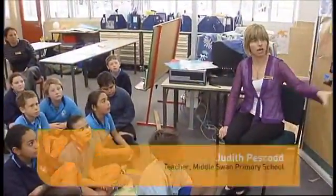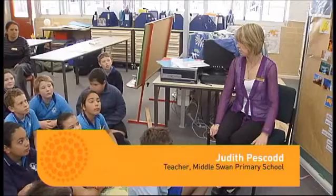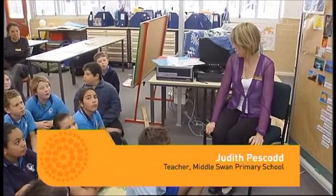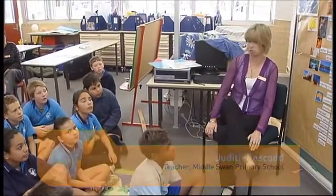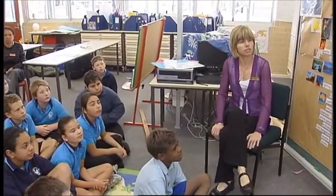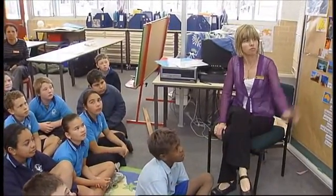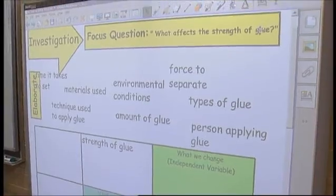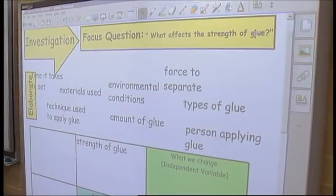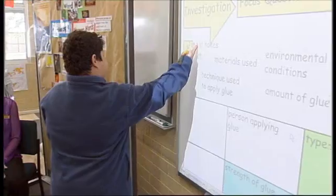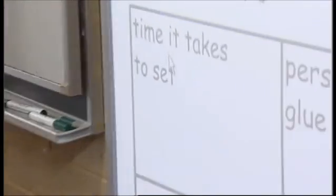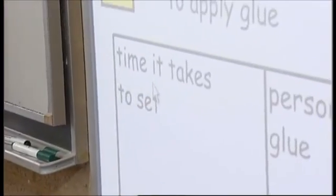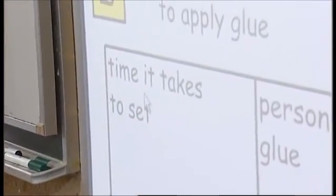We're ready to start doing our investigation. We have our page set up in our science journal. Our focus question is what affects the strength of glue, and we have a variable grid set up there — that's what we're going to be using for our investigation.